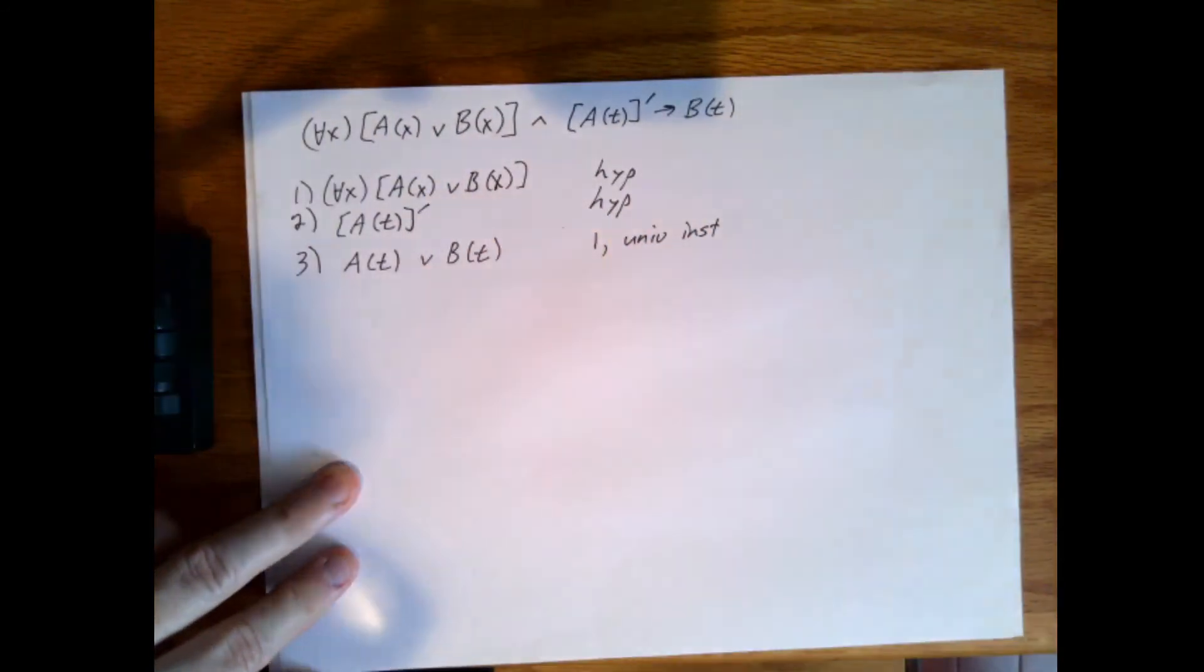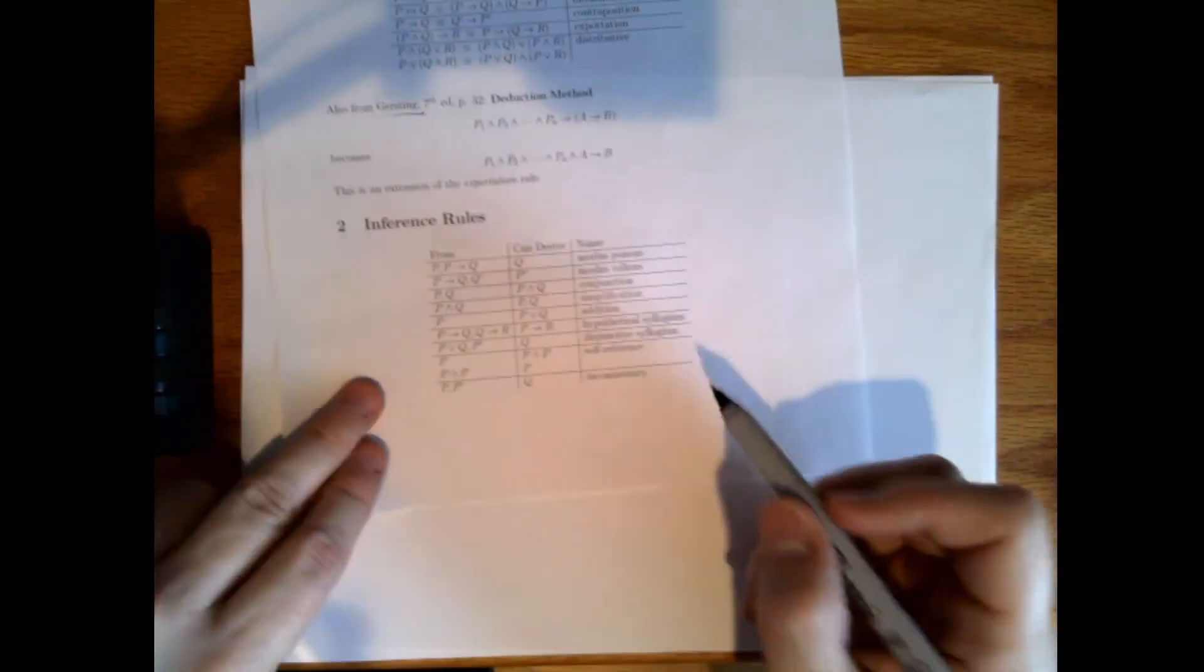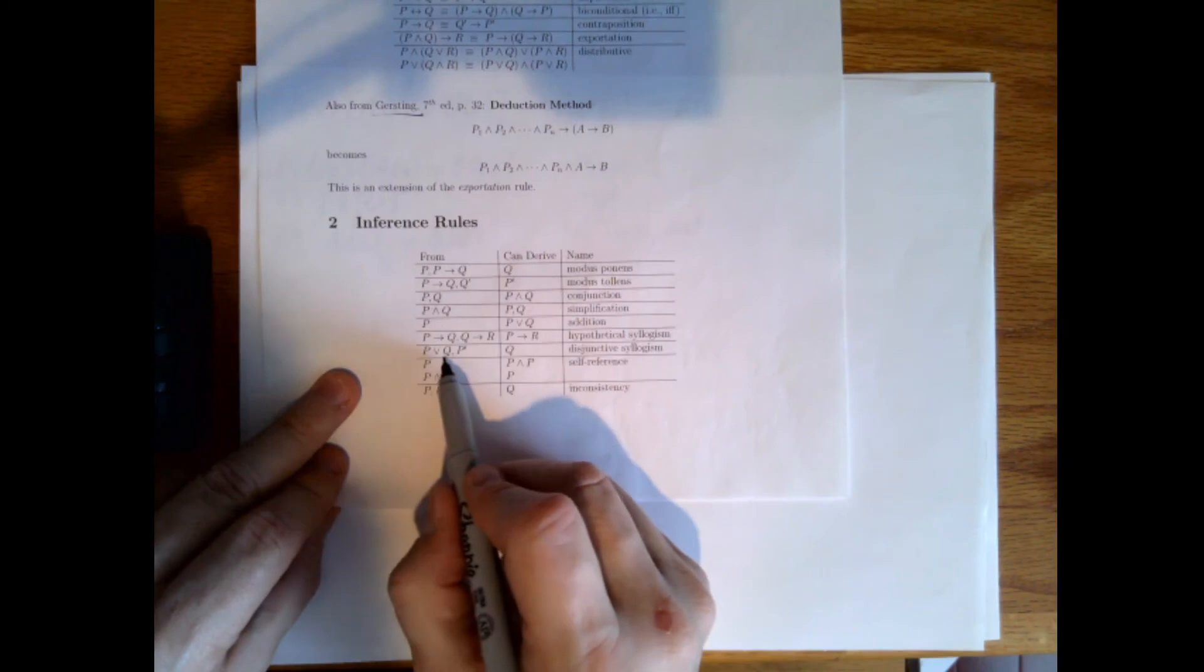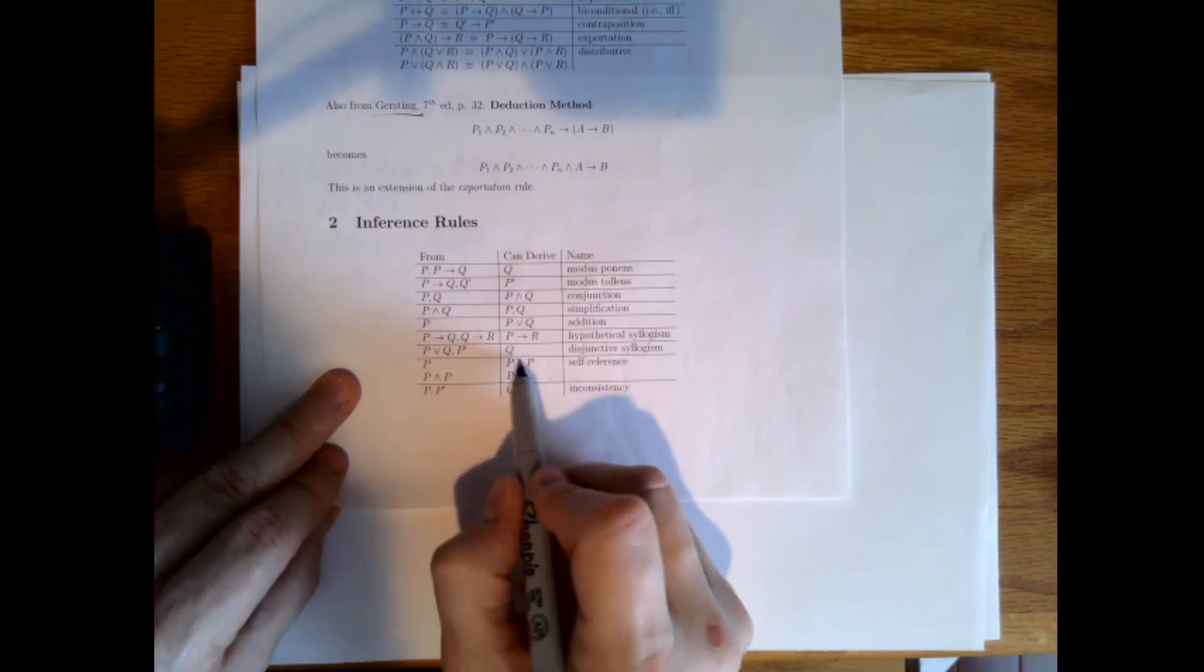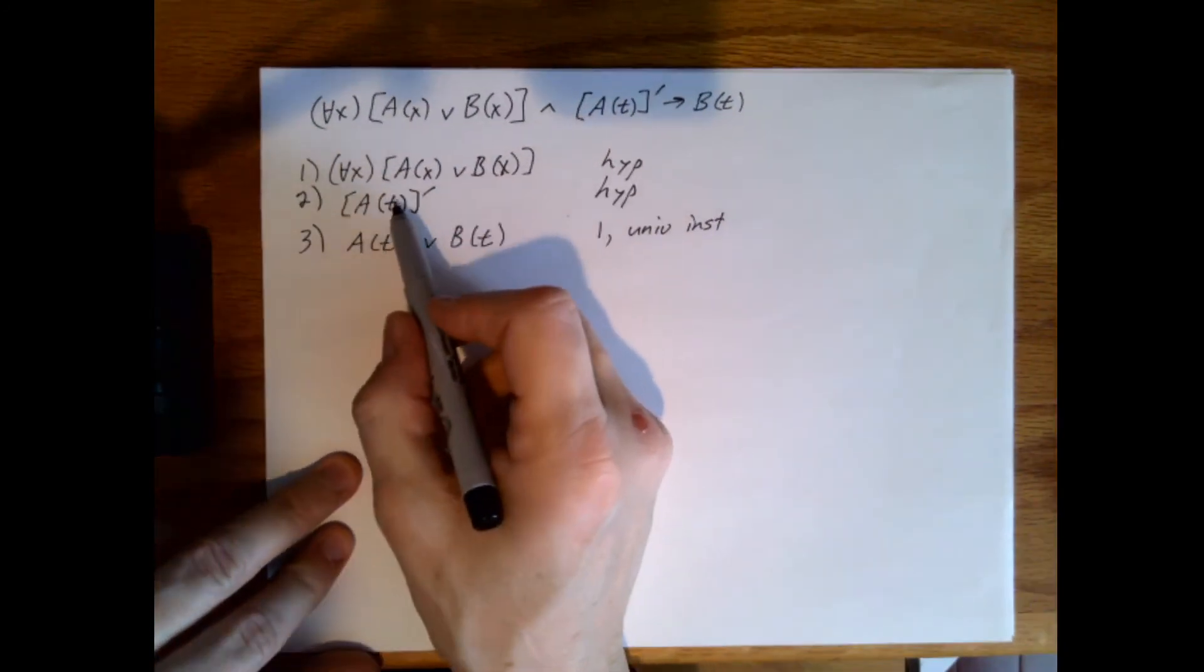And then what do we have here? Well, when I look back at my sheet, this looks like disjunctive syllogism. p or q and not p allows me to derive q. So this is basically what I have here. This would be the p, this would be the q.